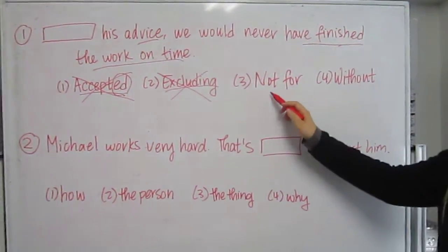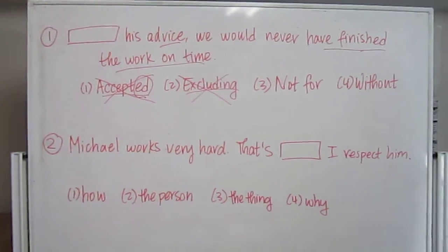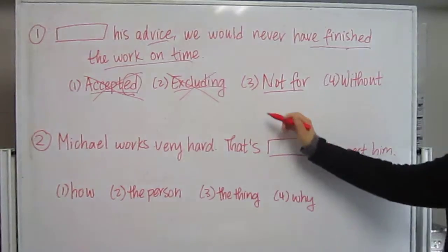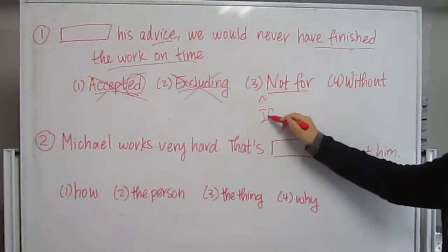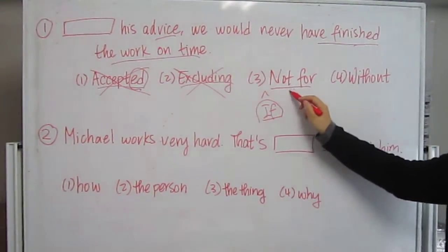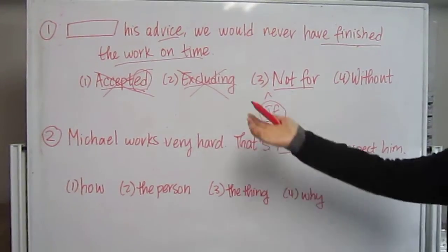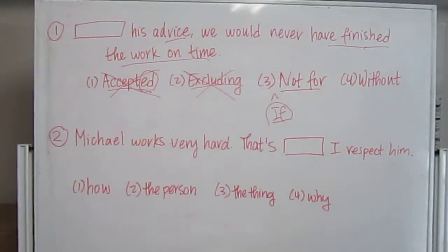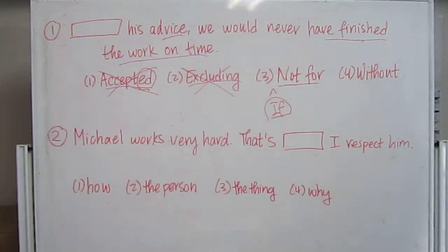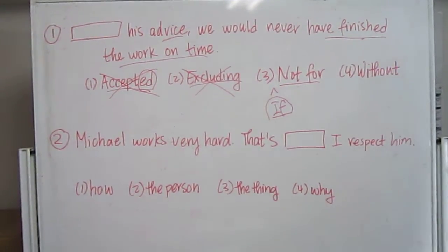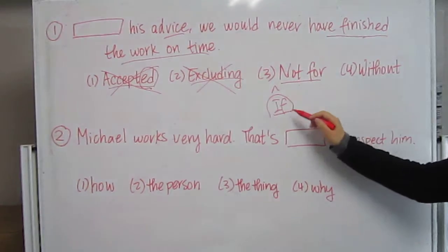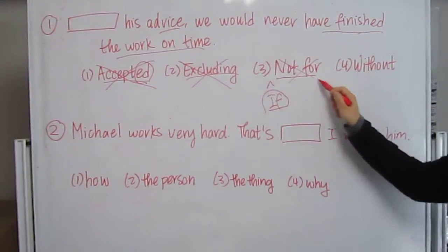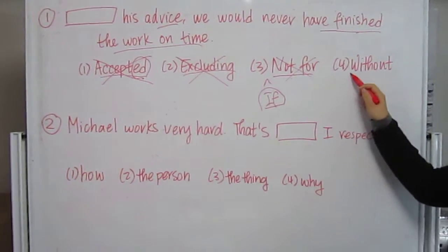Number three, not for. If the word if is in front of it, if not for his advice, we would never have finished the work on time. That would be a good sentence that's positive and makes sense. But they did not put if there. They were trying to trick you so it can't be not for.